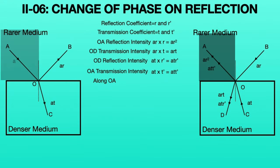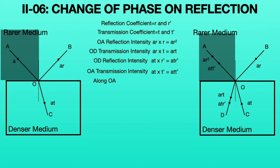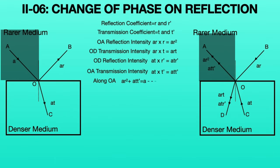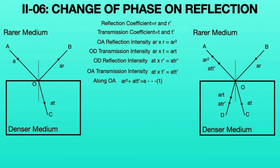Observing both the left-hand and right-hand side figures, the total intensity along the OA direction gives: AR² + ATT dash = A. Cancelling A on both sides, we get the second equation: r² + TT dash = 1.